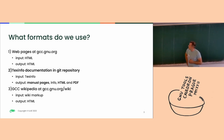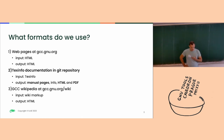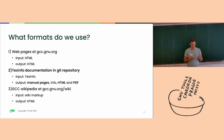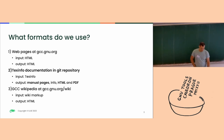We combine formats. For web pages it's obvious — it's HTML. For Wikipedia it's also obvious — it's wiki markdown. And the rest, the texinfo, is written in texinfo, and we output that into multiple output formats like manual pages, info pages, HTML and PDF. That's what the output looks like.